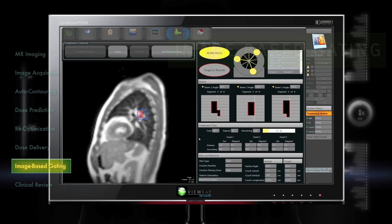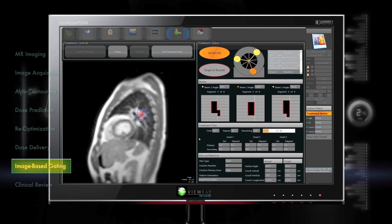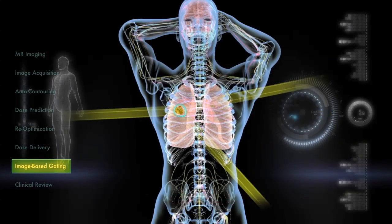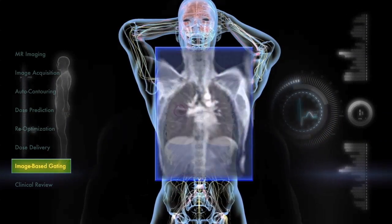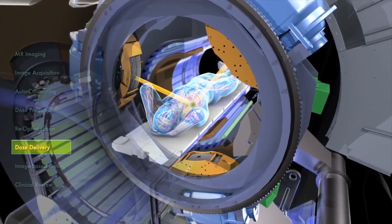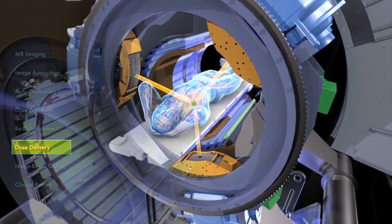Physicians can set acceptable limits on both distance and time for the gating parameters. Every time a sub-second image is captured, the system matches the image contours, checks the limits set by the physician and determines whether to continue or pause the treatment beam.